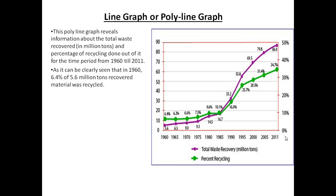Now for the highlighting features, give preference to least and maximum values, and you can include trends. Use a passive tone — for example: 'As it can be clearly seen, in 1960, 6.4% of 5.6 million tons of recovered material was recycled.' This combines two values in a single sentence, covering the initial and least values — that is your first highlighting feature.